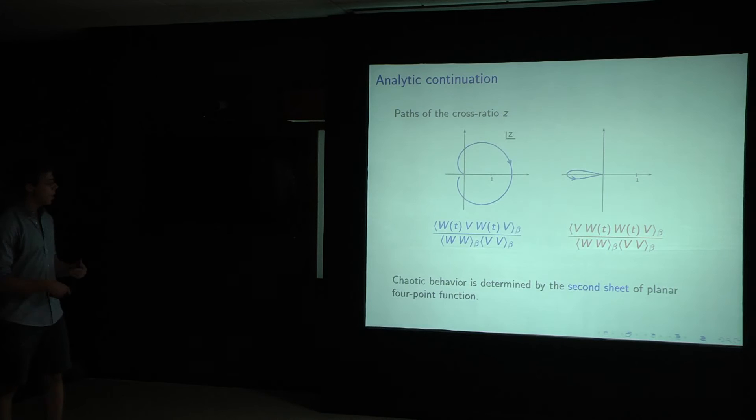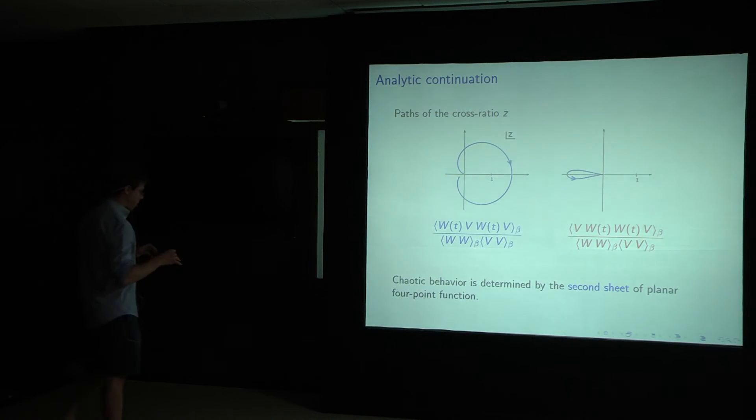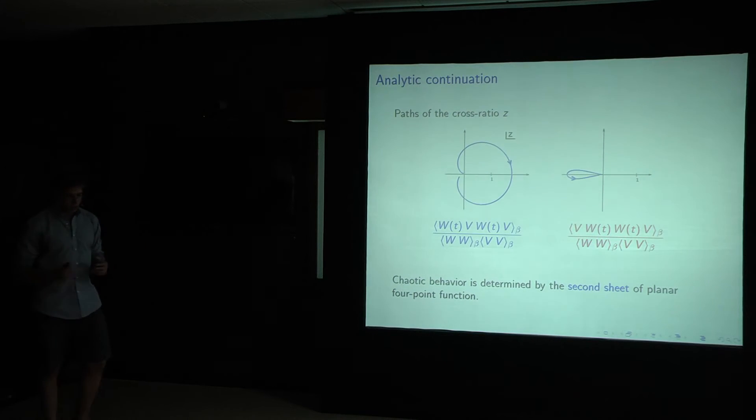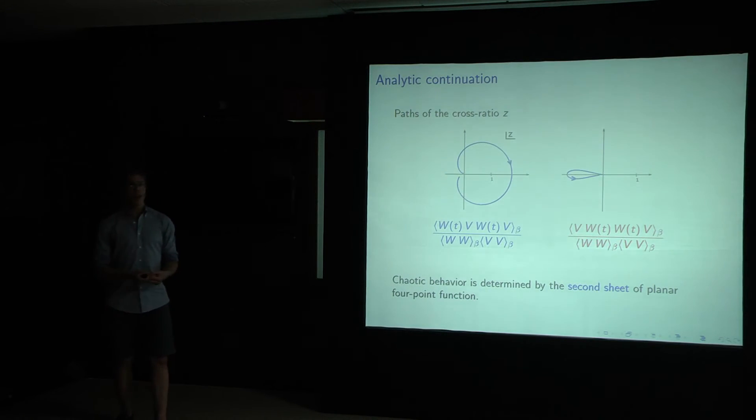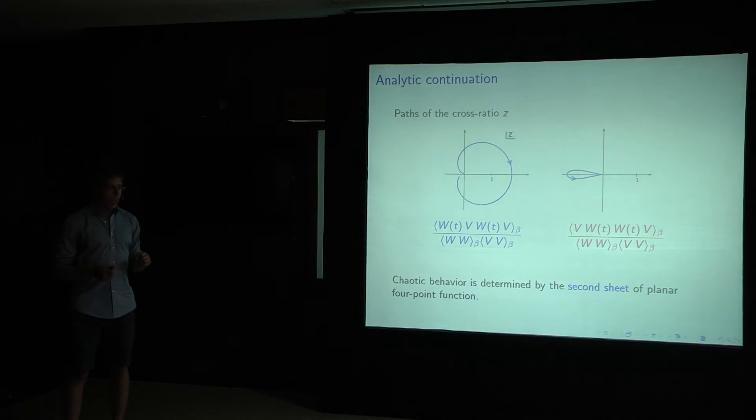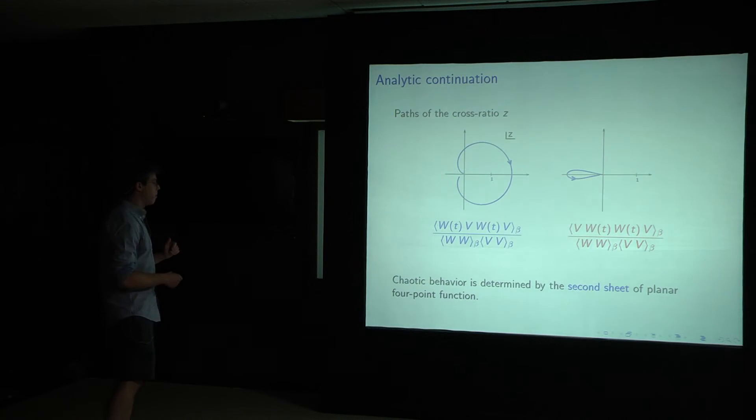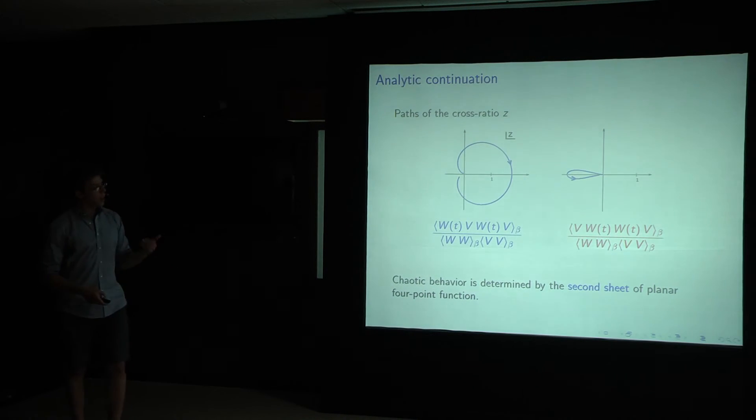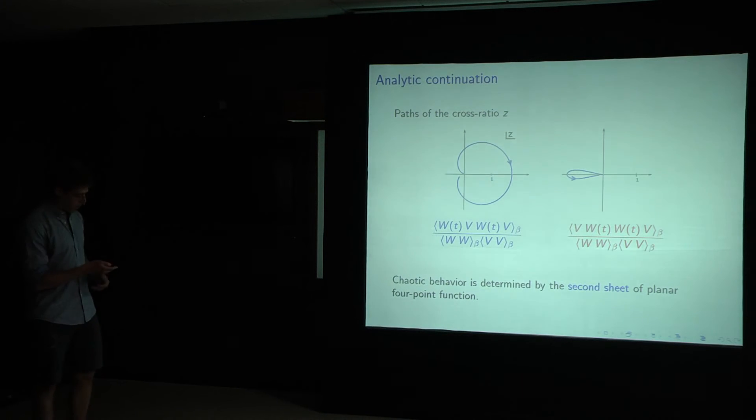So now that I've argued that we can get our Lorentzian four point functions by analytic continuation, we should figure out which analytic continuations correspond to which correlators. So the procedure is that we apply, it's a generalization of the I epsilon prescription, we apply Euclidean time to each of the operators in the correlation function in an order corresponding to our Lorentzian order of interest. Then we increase in Lorentzian time to large Lorentzian times, and we follow the path of the cross ratio z in the complex plane.